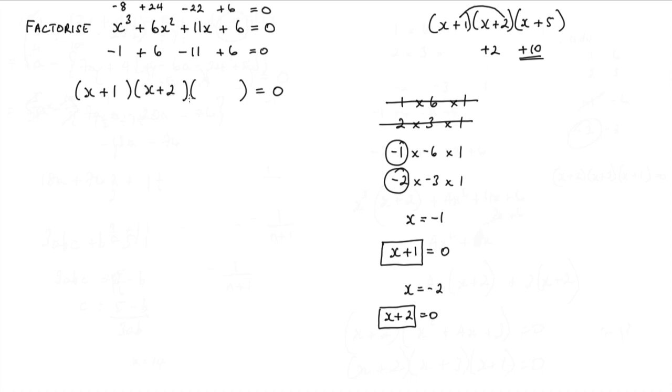Now clearly, we need to get an x cubed term. So we have to have an x here. We know they're all positive. And the only way to get a 6 on the end, well, we've got 1 times 2 is 2, so 2 times 3 will give me 6. And there is my final answer, the three factors: x plus 1, x plus 2, and x plus 3.